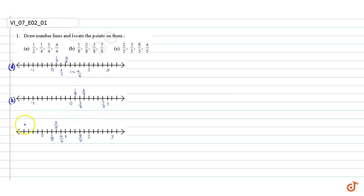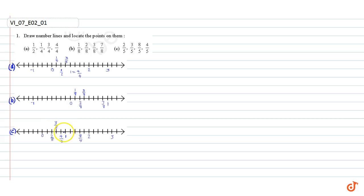In part C, we have drawn a number line and divided the gap between 0 and 1 into 5 equal parts. 2 by 5 represents 2/5 of the gap between 0 and 1 — that is here. 3 by 5 represents 3/5 of the gap between 0 and 1 — that is here, 3 steps from 0.